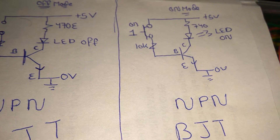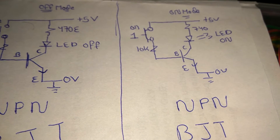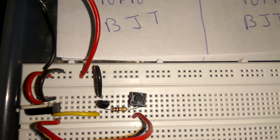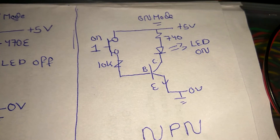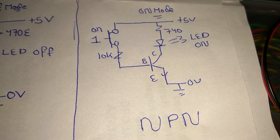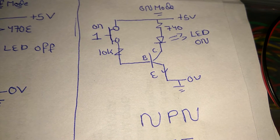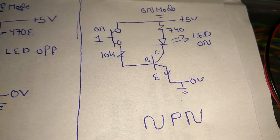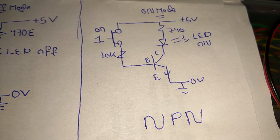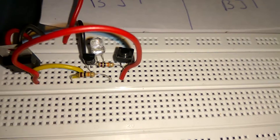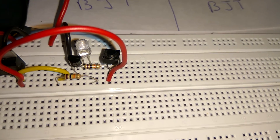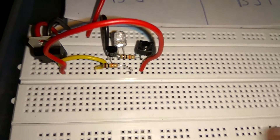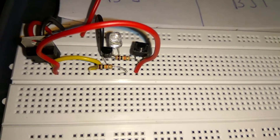Next, the emitter is connected to ground — zero volts. Then the collector is connected to the negative terminal of the LED, and the LED's positive terminal is connected to the 5V supply through a 470 ohm resistor. Note: it was incorrectly written as 740 in the diagram but it is actually 470 ohm. This is the 470 ohm resistor.